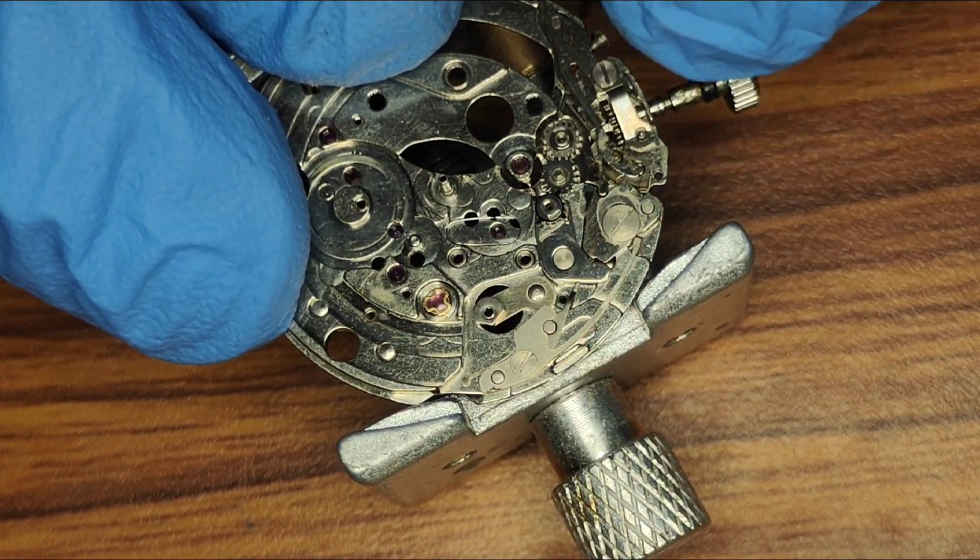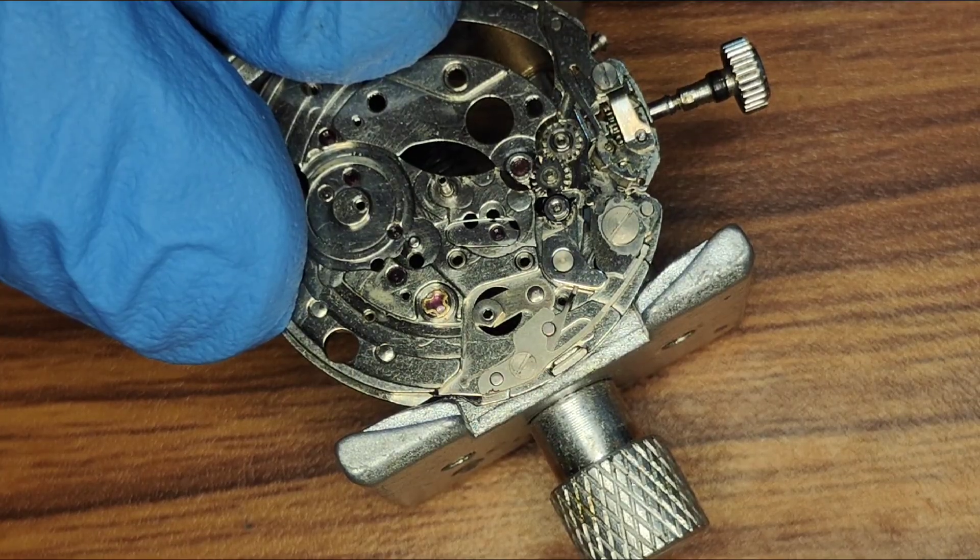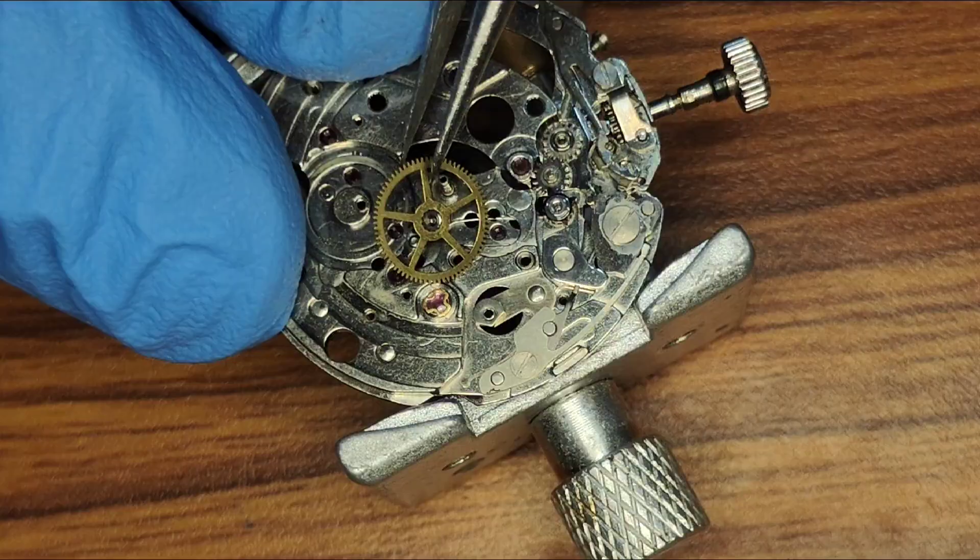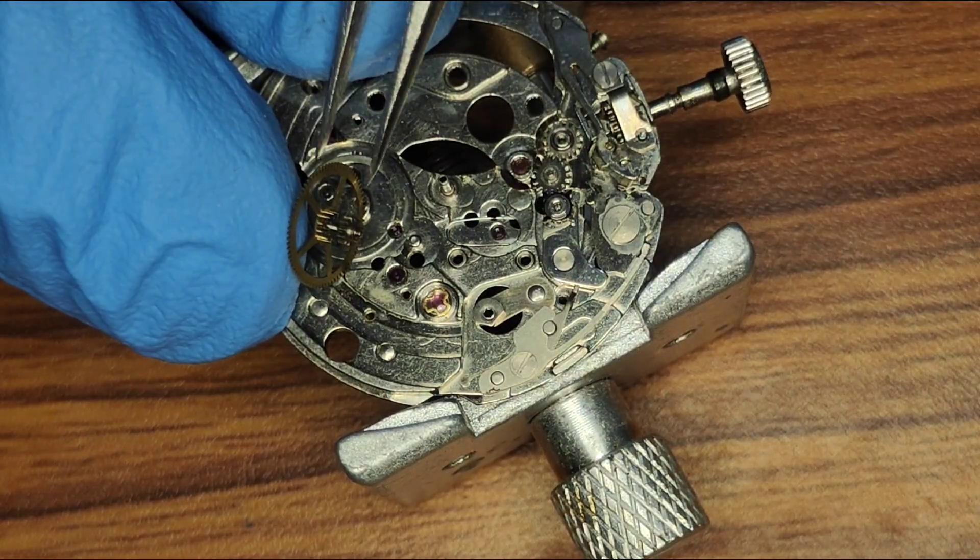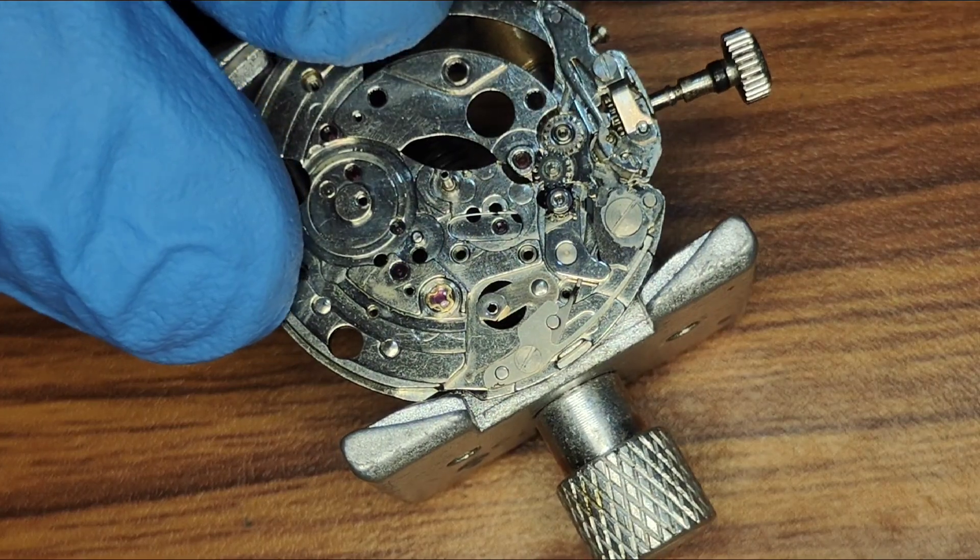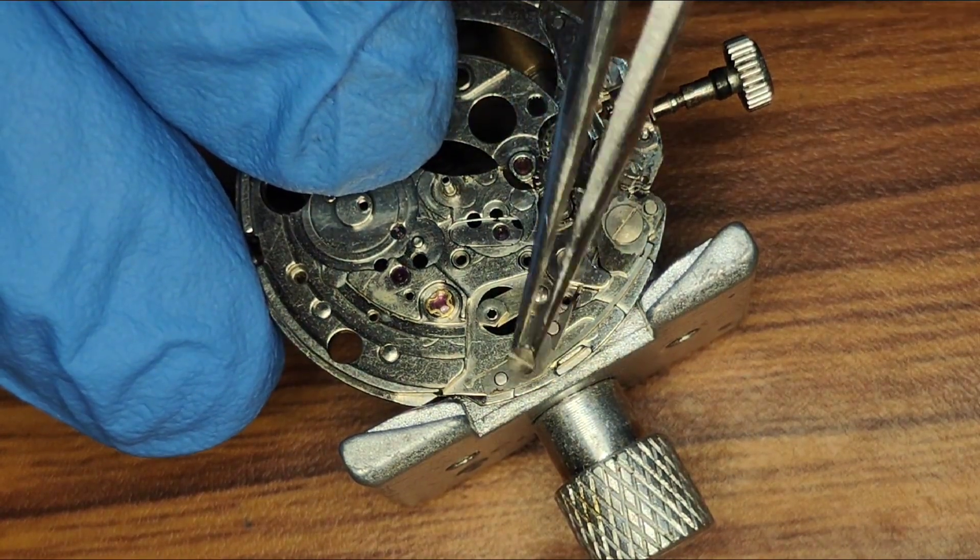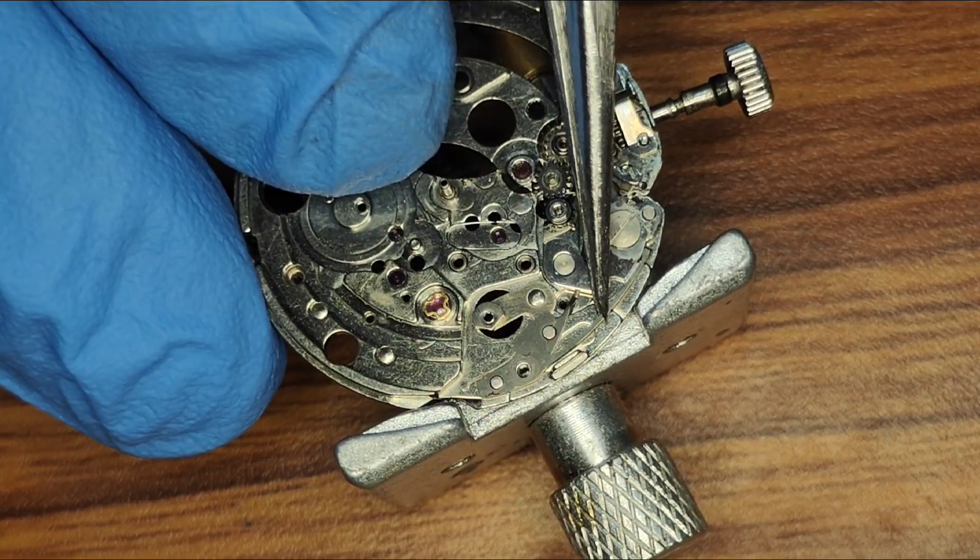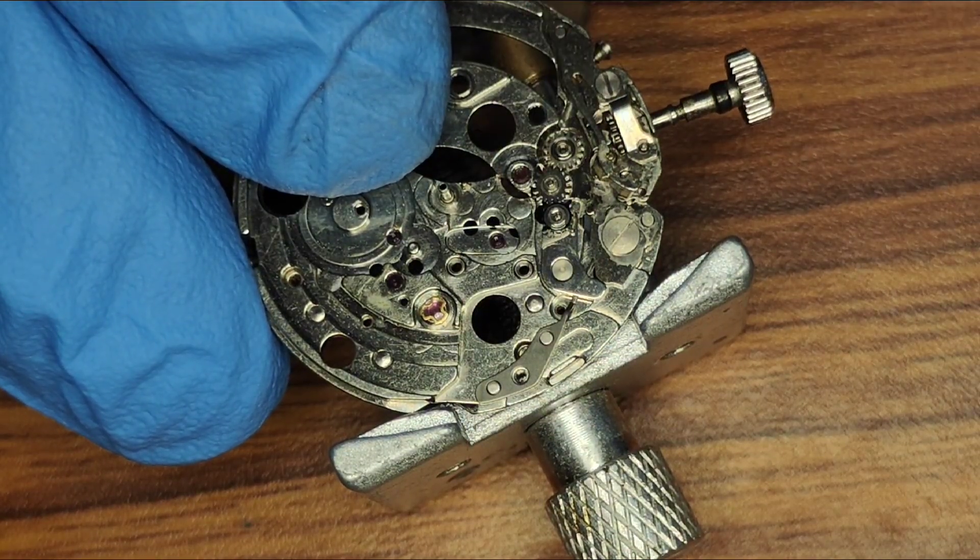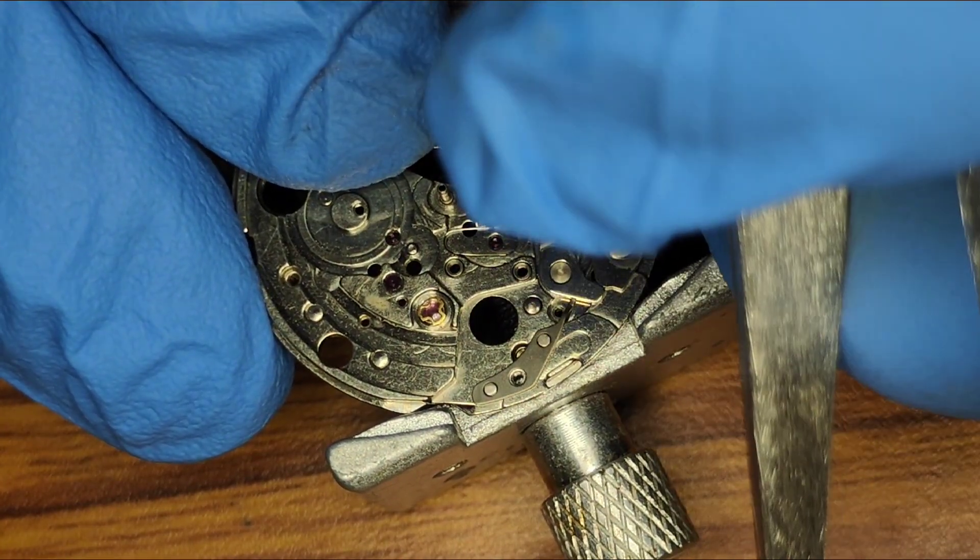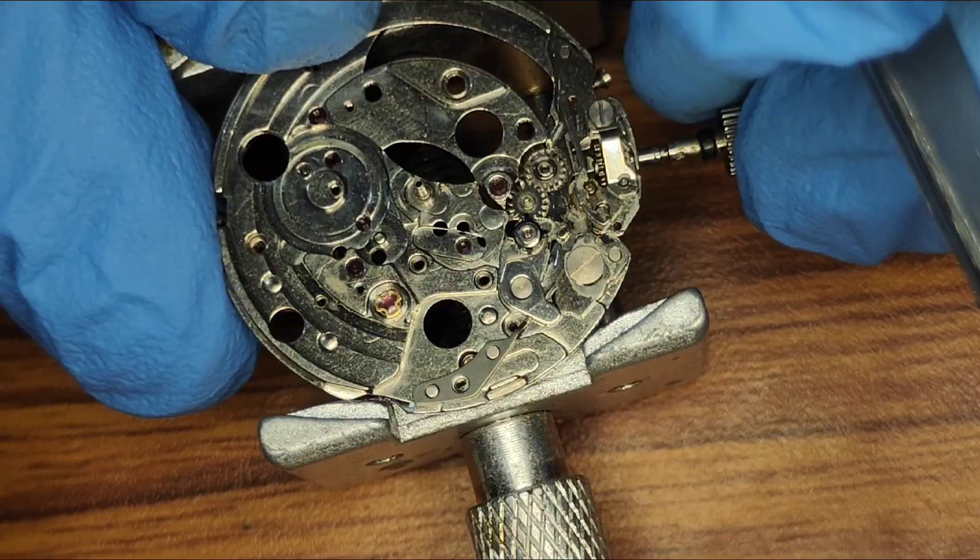This is how its keyless works. Day and date character works. First we will remove its date jumper. This spring is called day and date character wheel rocking lever spring. Now the rocking lever is not working once the spring is out. Now I will remove the setting lever spring.